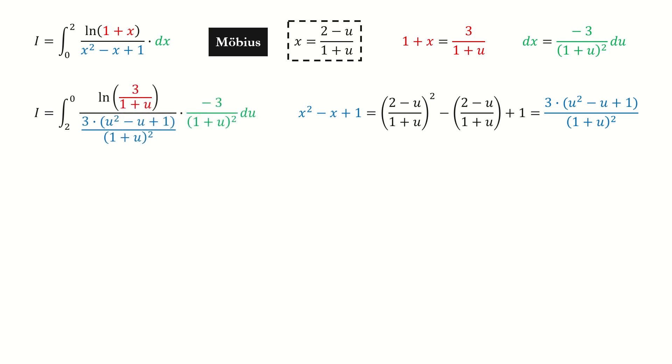After plug-in the substitution, we got here. Note for the lower and upper limit, they are converted here. And these two terms cancel out. Number 3 cancel out. We use this minus sign to flip the lower and upper limit.